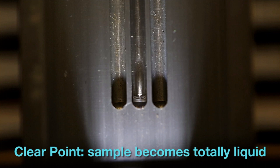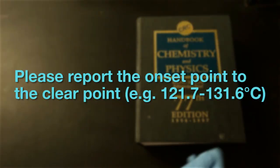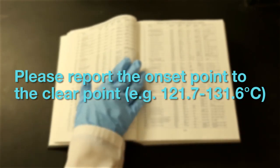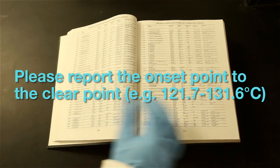The melting point is indicated by the onset and clear point values. We typically report the range from the onset point to the clear point, while some literature will report one of the three points discussed.